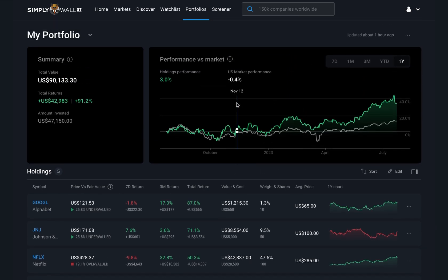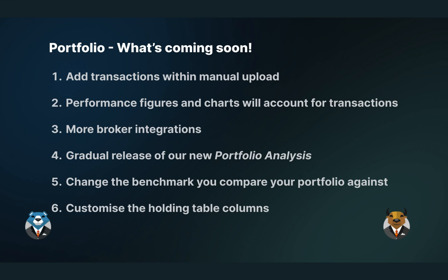Finally, let's talk about what we've got coming in future updates for the portfolio. In no particular order: 1. the ability to add transactions within manual portfolio uploads; 2. performance figures that account for transactions and measure performance more accurately from manual uploads and linked brokers; 3. more broker integrations that can be linked to your Simply Wall Street account; 4. a highly anticipated revamped portfolio analysis that will give you new and unique insights; 5. the ability to change the benchmark you compare performance against, including indexes like the S&P 500; and lastly, the ability to customize the holdings table columns to include things like intraday pricing.